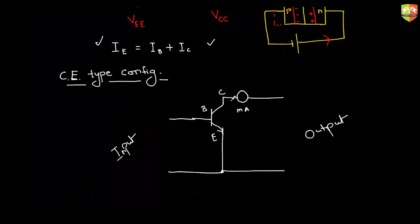Student question: Since there is no connection between the collector and base, where will we place the cell? Response: They are connected internally. You can't connect a source between base and collector and base and emitter directly. But you can connect a voltage source between collector and emitter, or between base and emitter — externally — then only it will work.